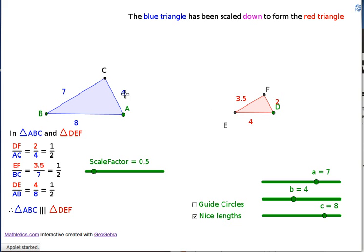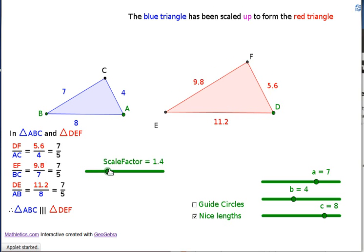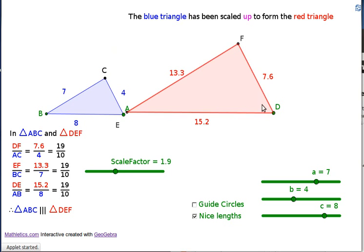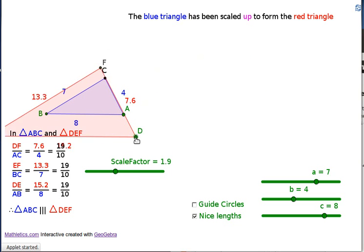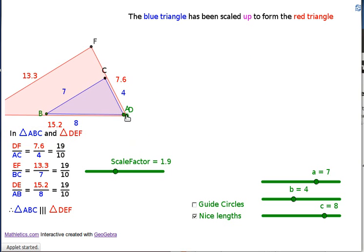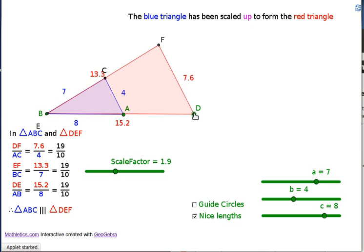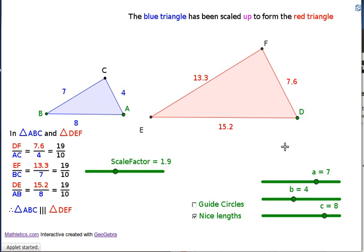8 to 4, and 4 to 2. And it doesn't matter what your scale factor is, it can be nice round numbers. Triangles are still similar because their angles are all the same, and the proportions of their lengths are always the same as well.